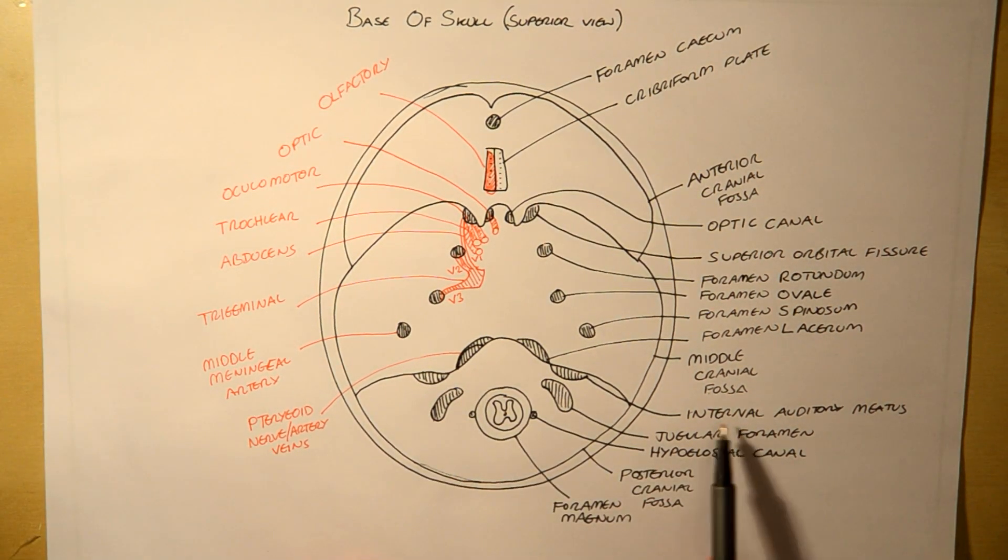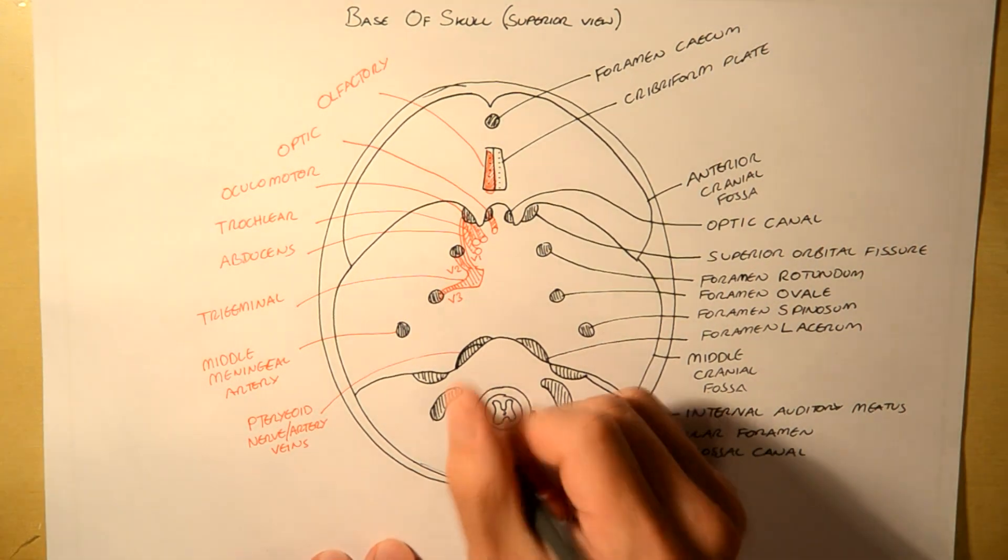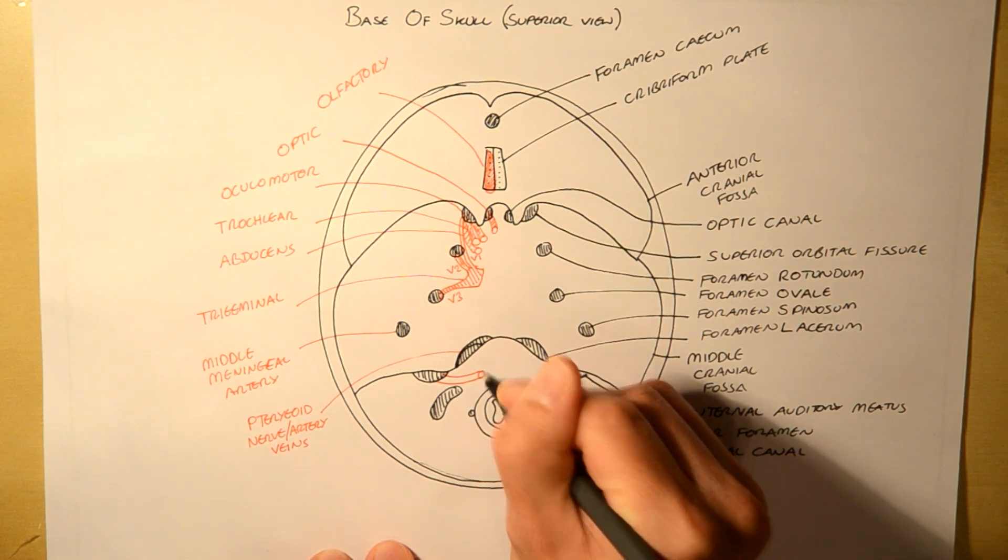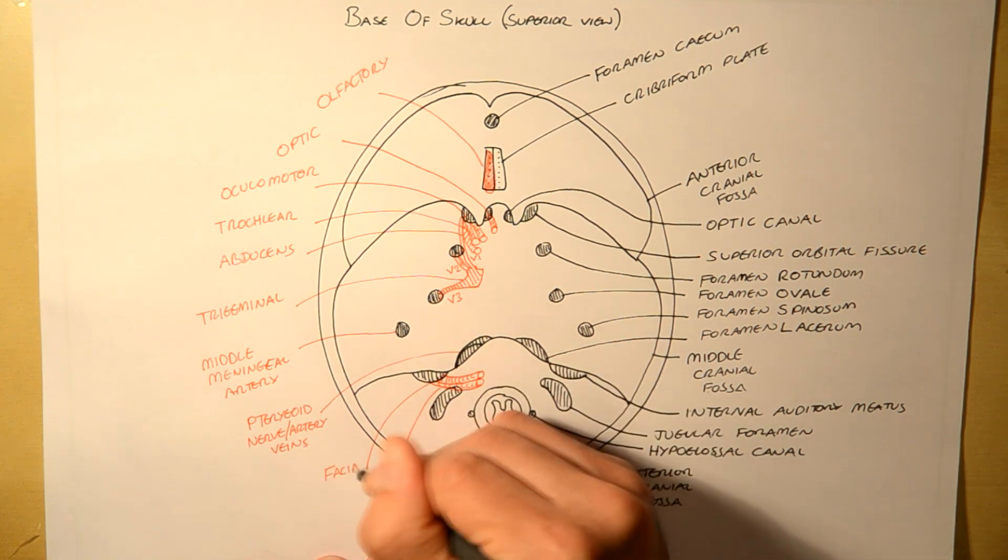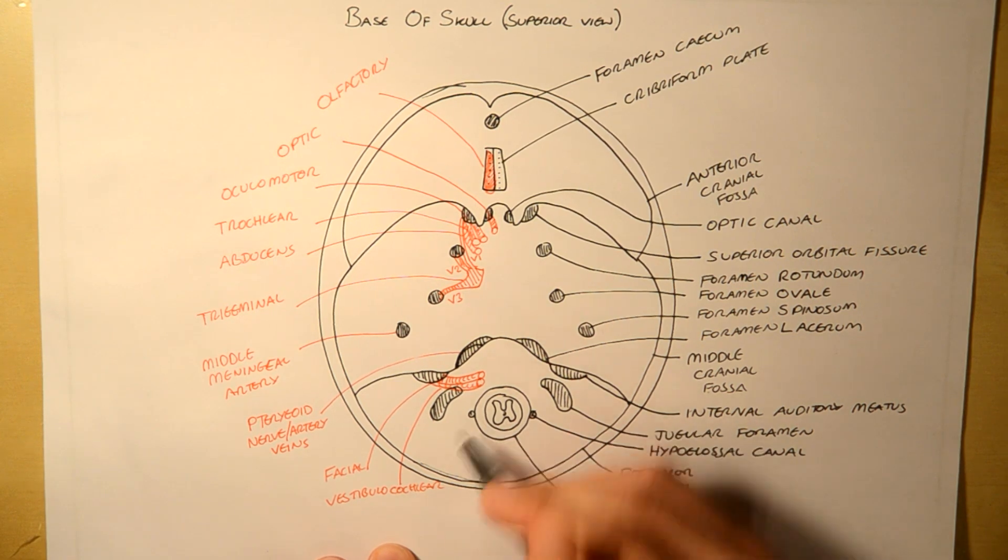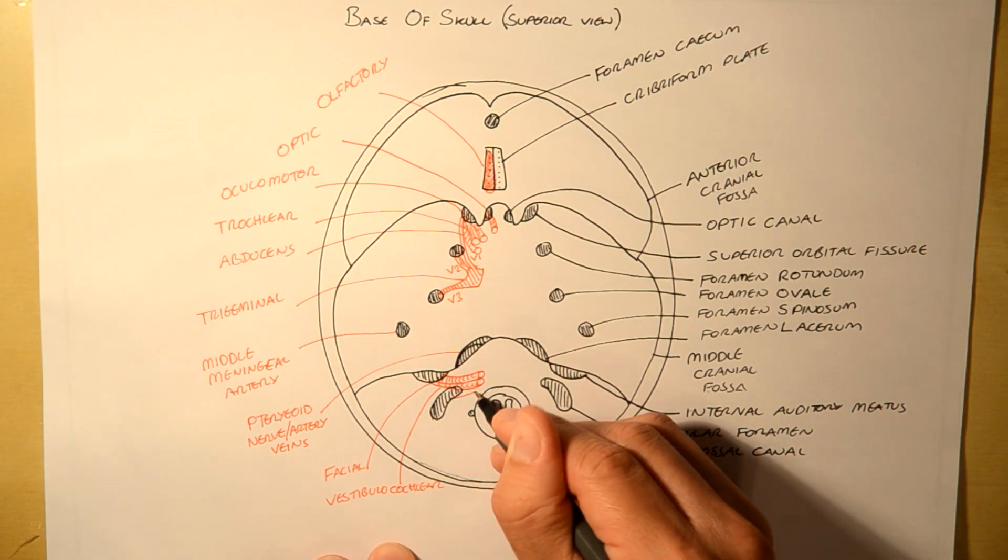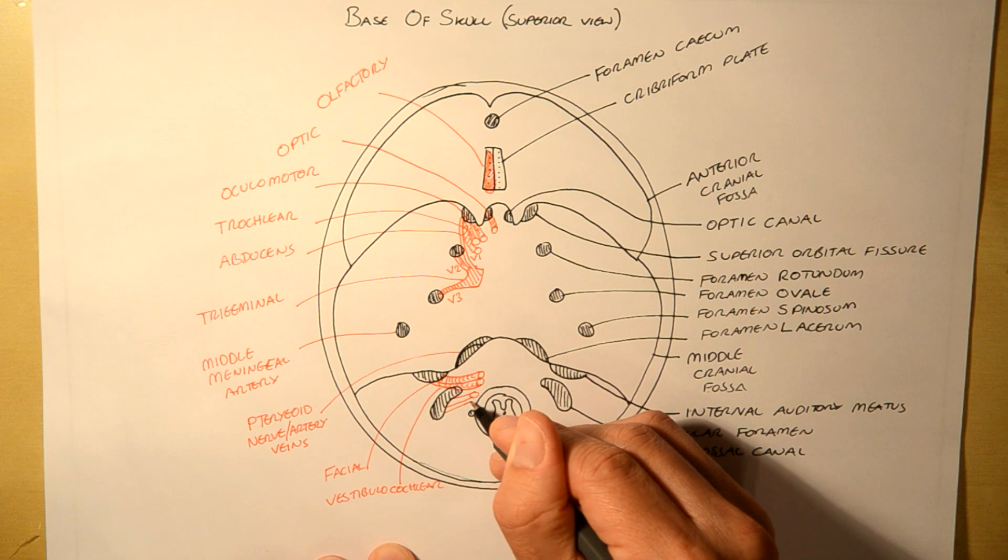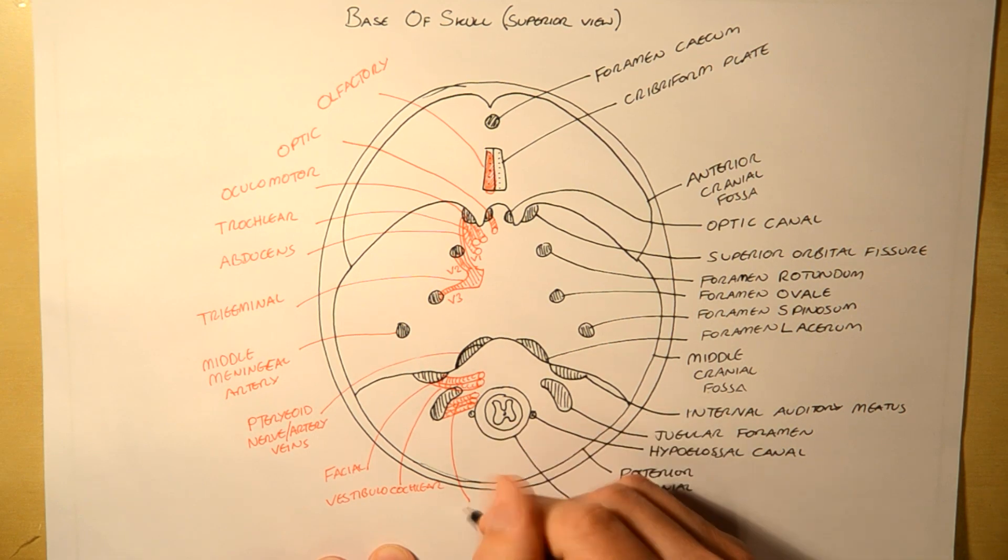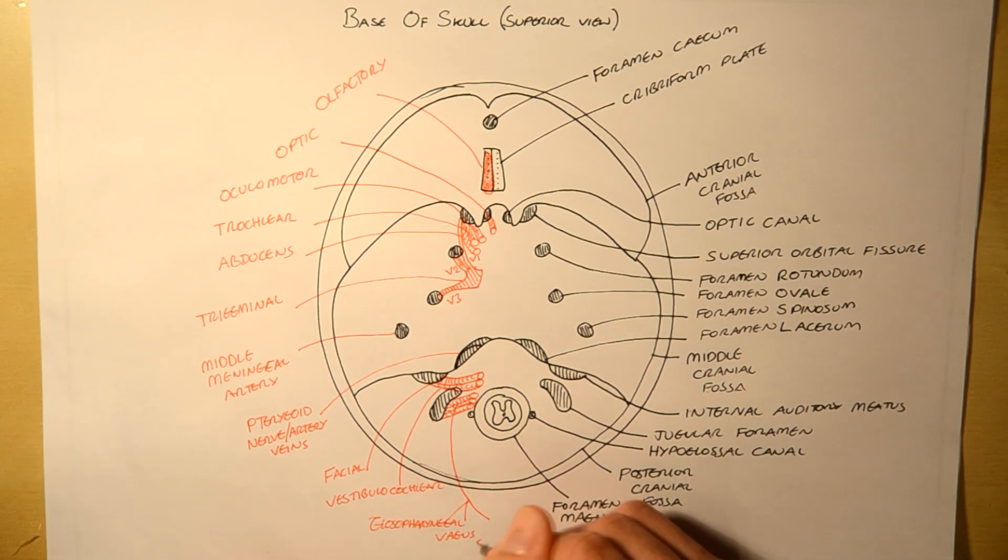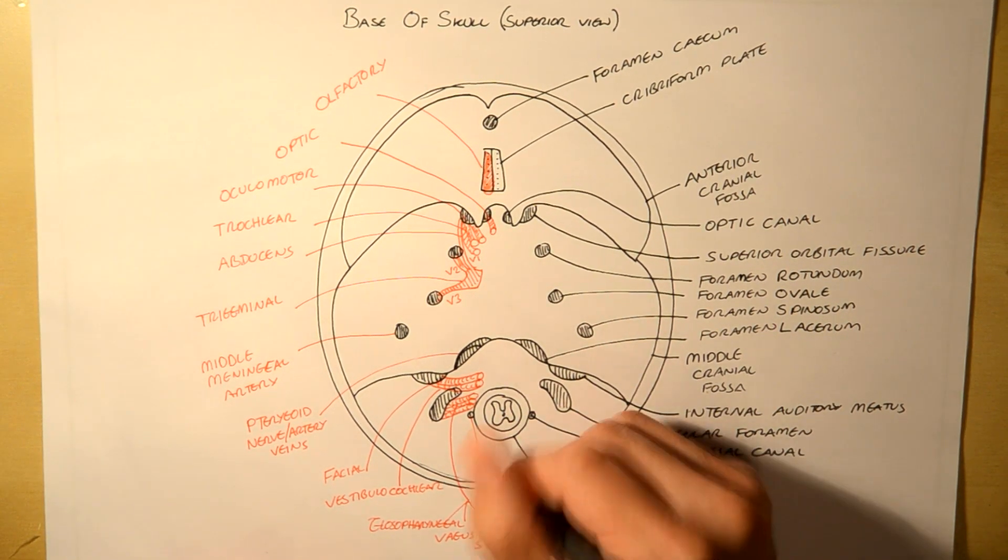Lastly, we're coming into the posterior cranial fossa. So here we have the facial, we also have the vestibulocochlear into the internal auditory meatus. We have the glossopharyngeal, the vagus, and the spinal accessory. And the very last, the hypoglossal down the hypoglossal canal.